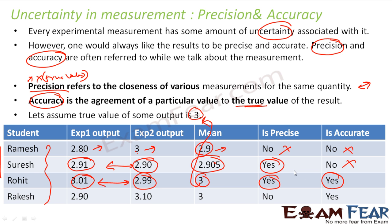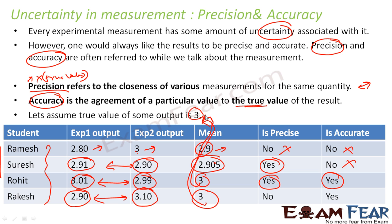Rakesh did the experiment. In the first trial he found 2.90, and next he found 3.10. There is a huge difference in these two results — a 0.2 difference — so the results are not precise. But if you take the mean, you get 3, and 3 is equal to the actual value. So I can say it is accurate but it is not precise.